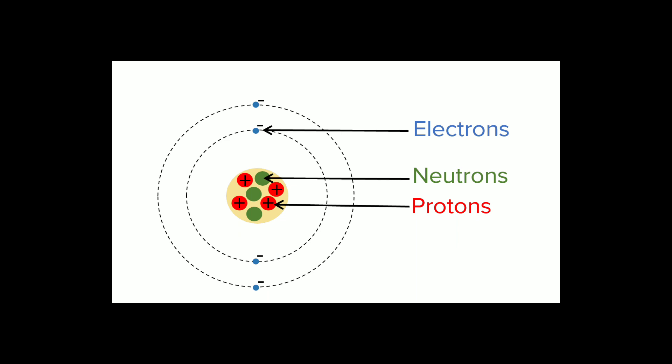Protons that exist in the nucleus possess positive charge, while electrons have a negative charge which is the same size of protons. Neutrons are chargeless or have no charge.